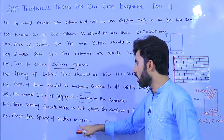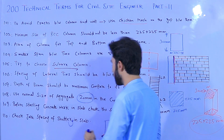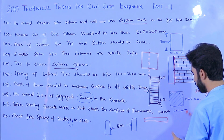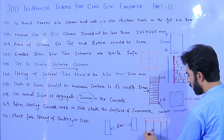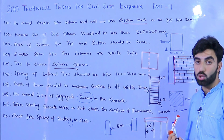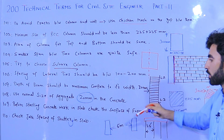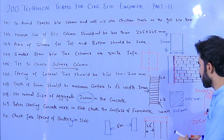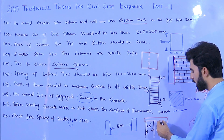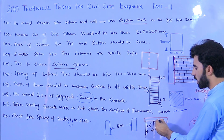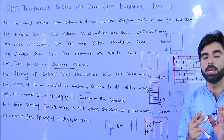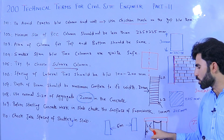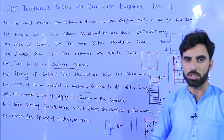Term 110: Check the jack spacing of shuttering and slab. The support spacing should not be more than 2.5 feet. If the jack spacing is too large, the self-weight of the concrete can cause the supports to fail or create a bending moment due to the load. Therefore, jack spacing should be equal and not more than 2.5 feet (about one meter), per ACI — the American Concrete Institute.